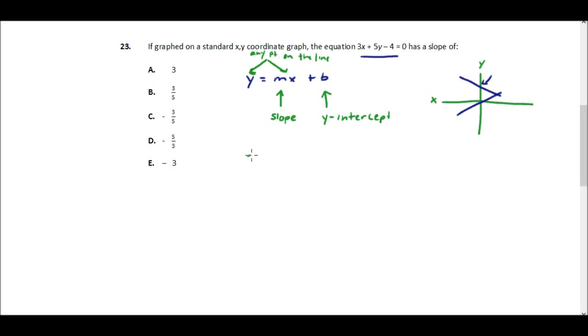So simple enough. We start with 3x plus 5y minus 4 equals 0. Well, I'll move the 4 over first, so I just add 4 to both sides, and that means I have 3x plus 5y equals 4.